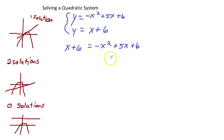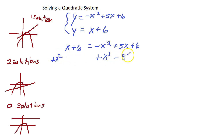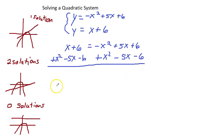Since I'd like to have my squared term positive, I'm going to move everything to the left side. So I'm going to add x squared to both sides, subtract 5x from each side, and subtract 6 from each side. Combining like terms on the left, the right side cancels out to zero. So I have x squared minus 4x equals zero.